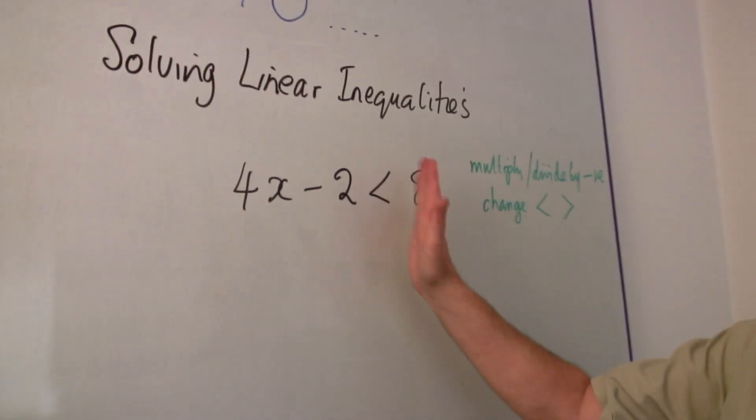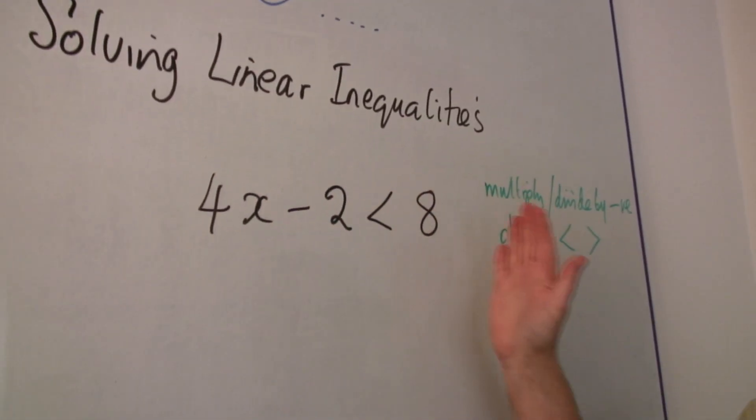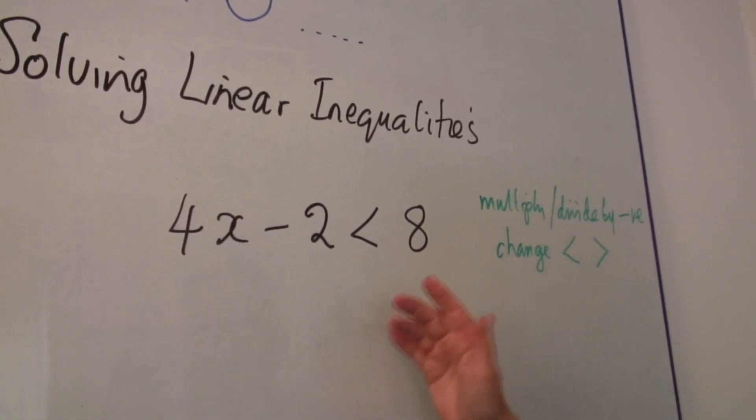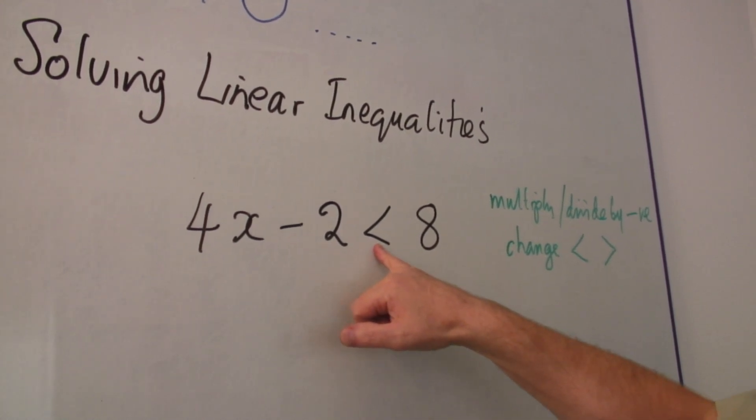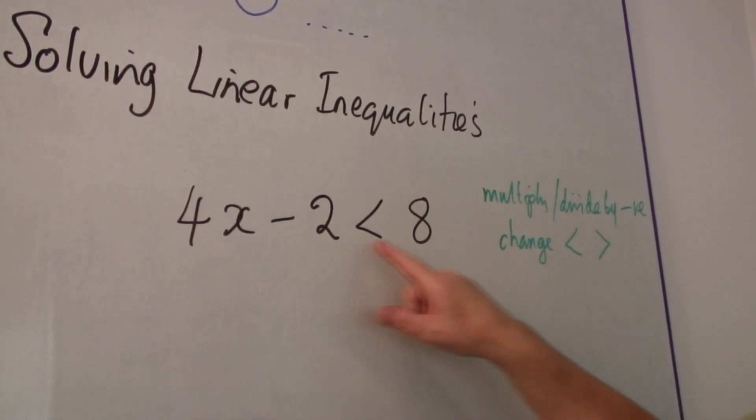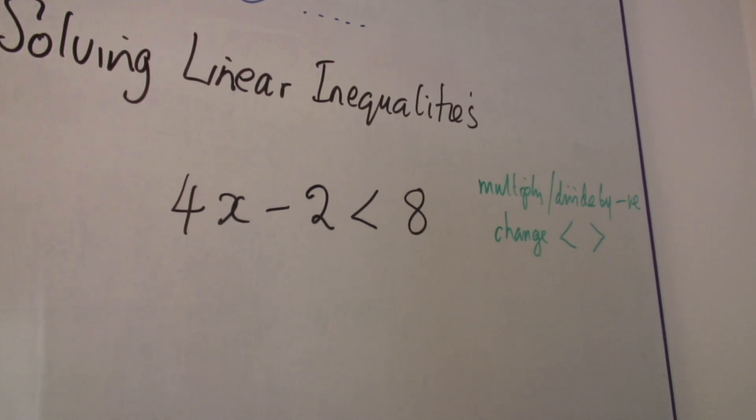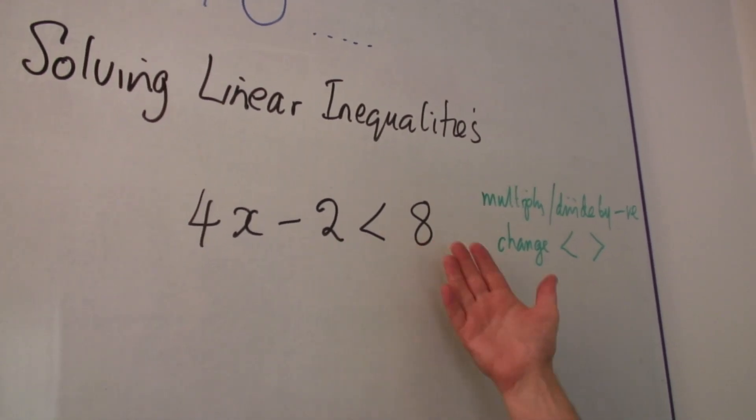Here we know we can actually deal with it as though it is an equation. But it isn't, it's an inequality. So 4x minus 2 is less than 8. What we can do is the same to both sides.